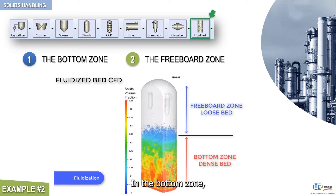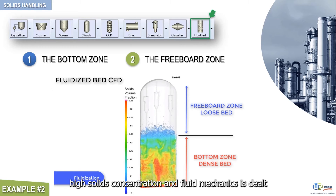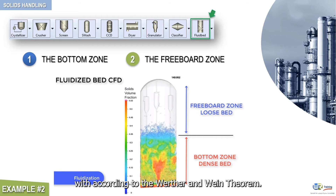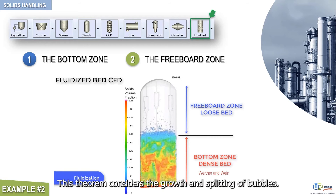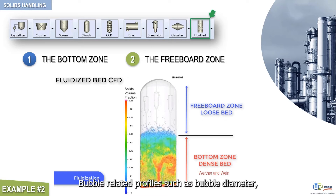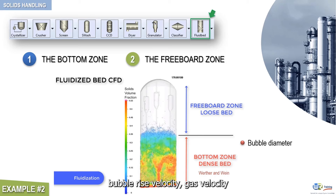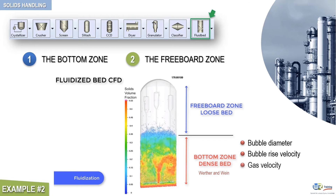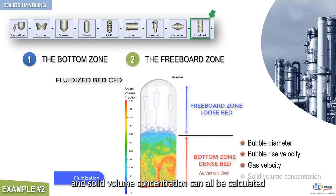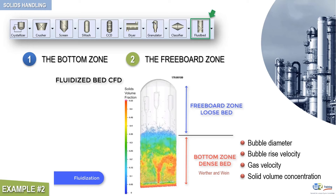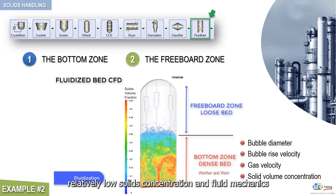In the bottom zone, high solids concentration and fluid mechanics is dealt with according to the Werther and Wine theorem. This theorem considers the growth and splitting of bubbles. Bubble-related profiles such as bubble diameter, bubble rise velocity, gas velocity, and solid volume concentration can all be calculated.